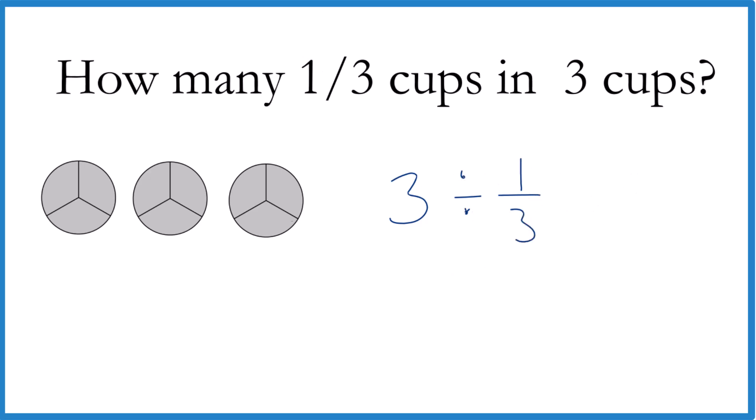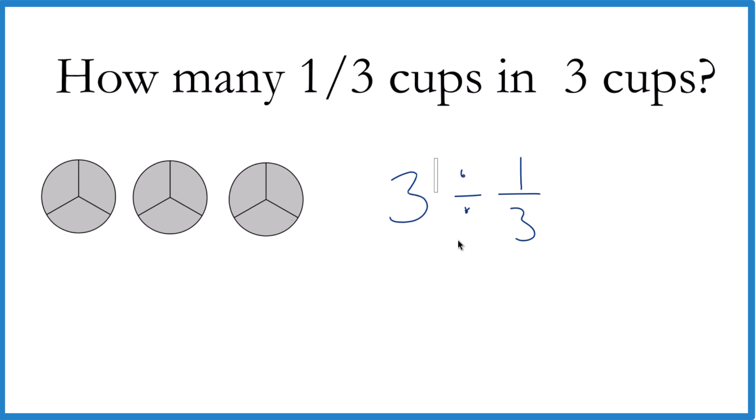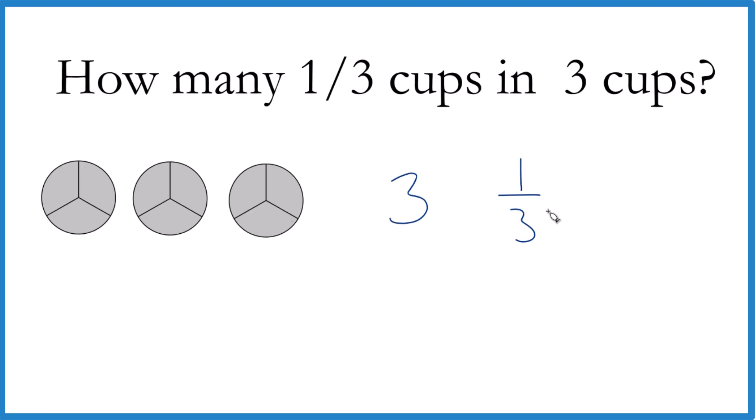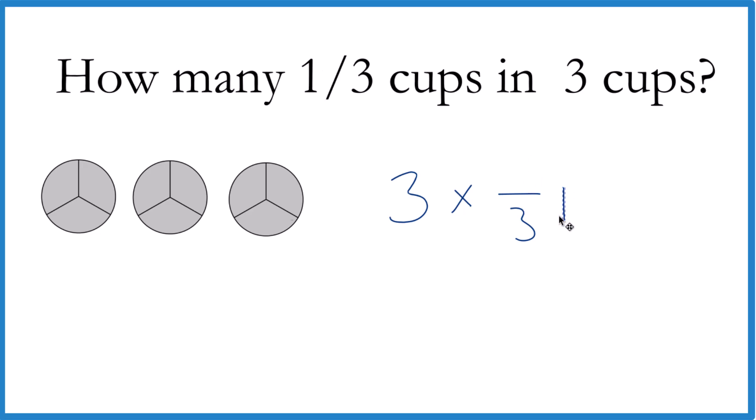What we can do though, instead of division, let's do multiplication. So let's get rid of this here and we're going to multiply. And when we multiply, we want to multiply by the reciprocal of one-third. So we move the one down here and the three up here. That's our reciprocal.